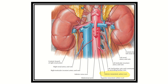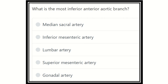Hi everyone, welcome to another question and answer session for the MRCS exam. Here the question is: which is the most inferior anterior aortic branch? It is one of the direct questions. First of all, we have to find out the anterior aortic branches, then it will be very easy to determine which artery is the most inferior but anteriorly located. Here are the options: